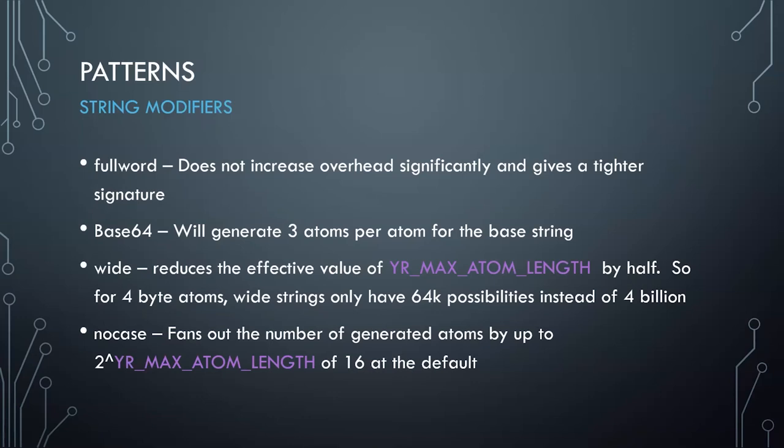Base64 is also a lot more convenient than manually generating the three strings, and the performance is the same anyway. The wide modifier has one weird side effect: it effectively reduces the value of your max atom length by half. For four-byte atoms you're only getting an effectively two-byte atom, and there are only 64K possibilities.